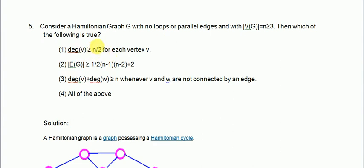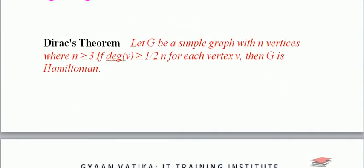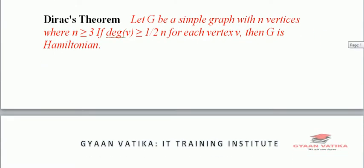Option number 1 states: degree of vertices greater than or equals to N/2 for each vertex V. This option is basically a theorem known as the Dirac theorem, which states that let G be a simple graph with N vertices where N ≥ 3. If the degree of each vertex is greater than or equals to N/2, then G is Hamiltonian.